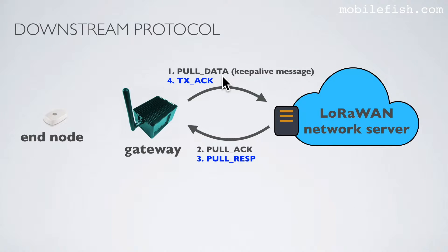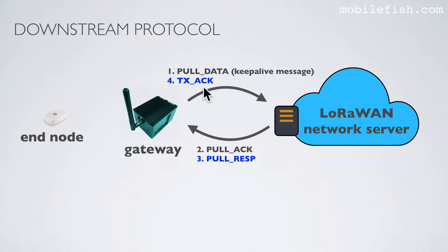After the server receives the pull data packet, the server sends a pull acknowledge back to the gateway to confirm that the network route is open and that the server can send pull response packets at any time to the gateway. When the gateway receives a pull response packet, the gateway sends a transmission acknowledge feedback to inform if the downlink request has been accepted or rejected. The transmission acknowledge feedback can contain a JSON object to give more details on success or failure. If no JSON is present, meaning an empty string, this means no error occurred.